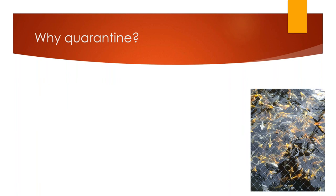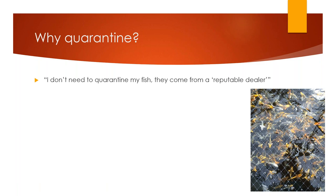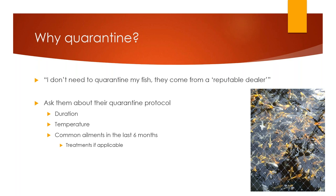We often hear: I don't need to quarantine my fish, they come from a reputable dealer. Unfortunately, no matter how reputable a dealer, there is always a chance that they will be bringing in sick and diseased fish. It's very important to ask them about their quarantine protocol. You need to understand the duration, the temperature, any outbreaks they've had in the last six months, and any treatments they've used. If that reputable dealer won't share this information with you, it's time to go somewhere else. Any truly reputable dealer will give up this information to their clients without any questions.